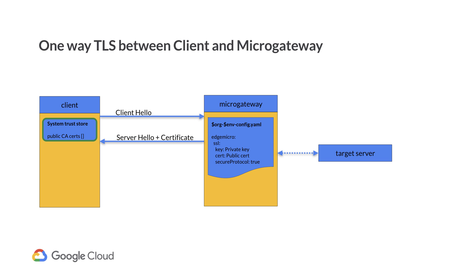In the end, if the client is satisfied with the server's public certificate, it begins the key exchange process. The private key is used in the key exchange process and, as its name suggests, it must be kept confidential, since this is where the server proves it owns the public key. When the process is completed, the client and the server may begin to exchange messages over HTTPS.